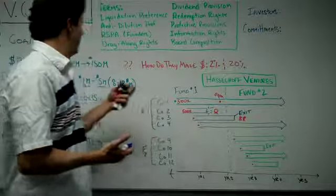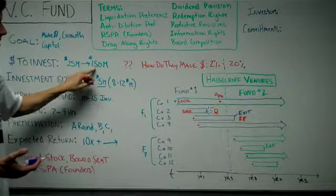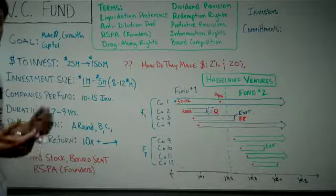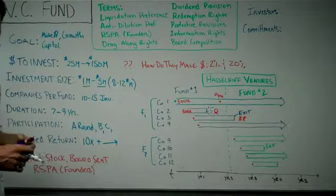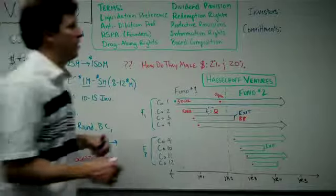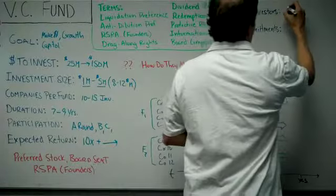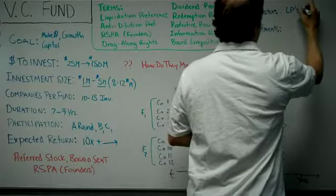So where does this money come from that the VCs are investing? When they go out and raise $150 million, sometimes it's personal money of the managers if they're really high net worth individuals. More often than not, they're raising it from their own investors, which they call LPs, limited partners.